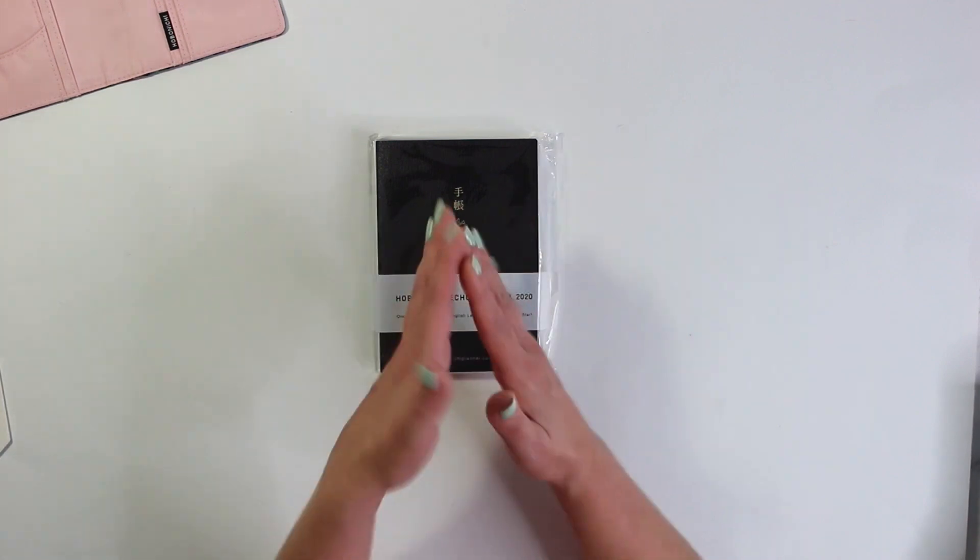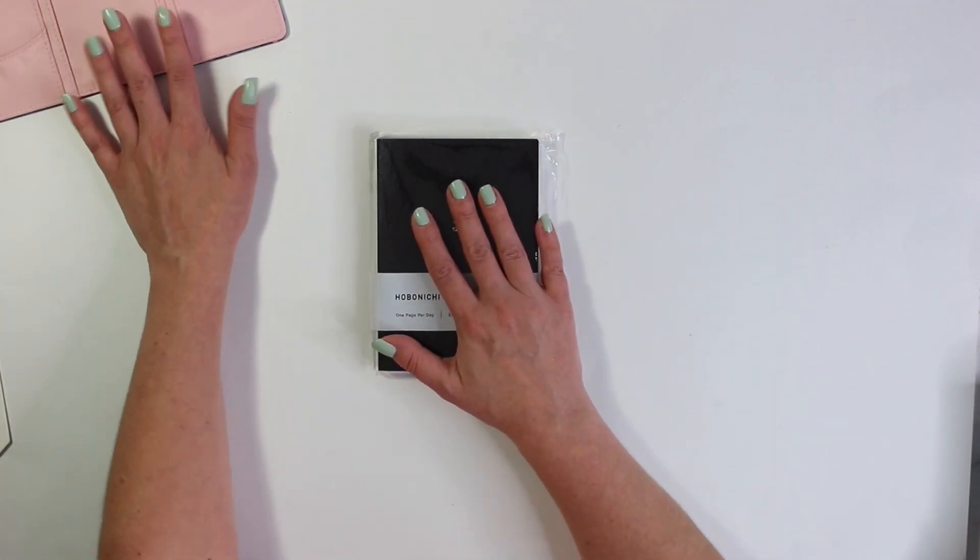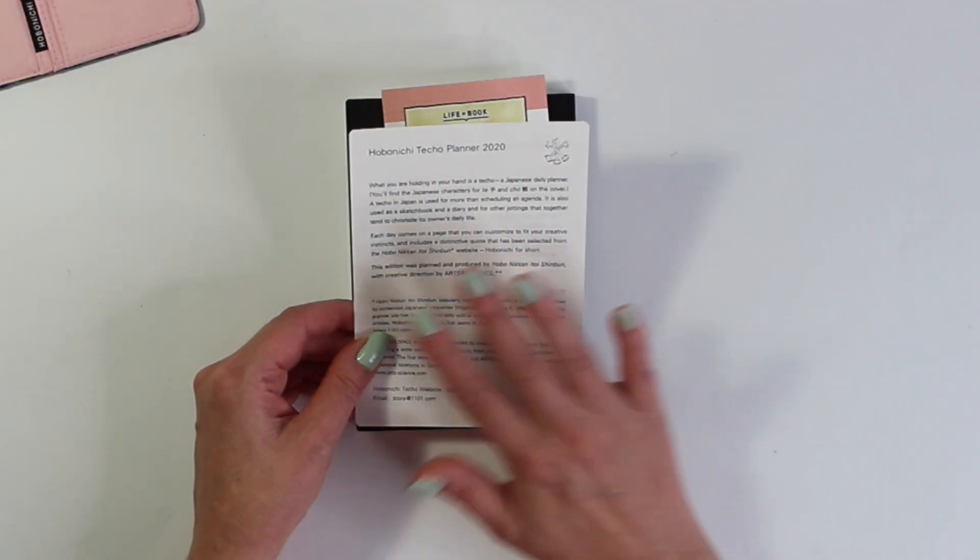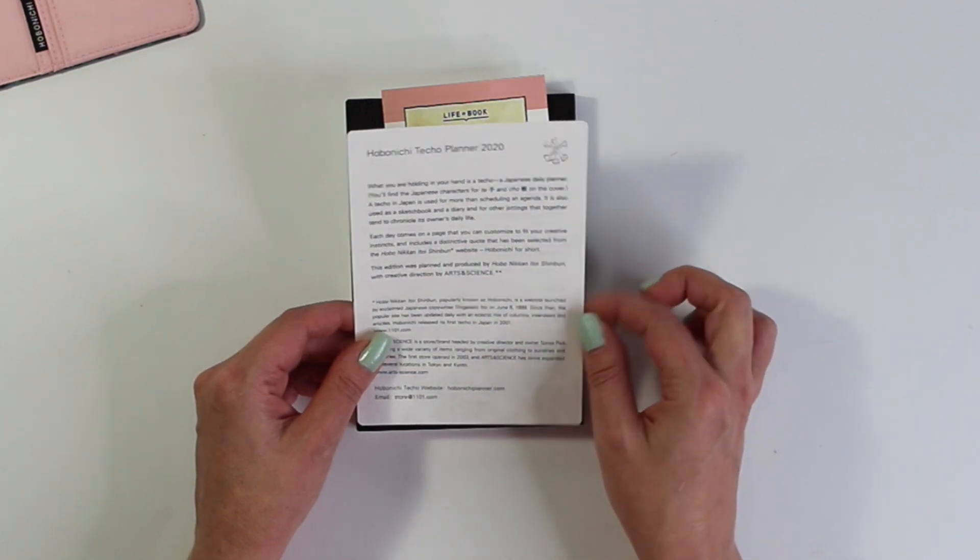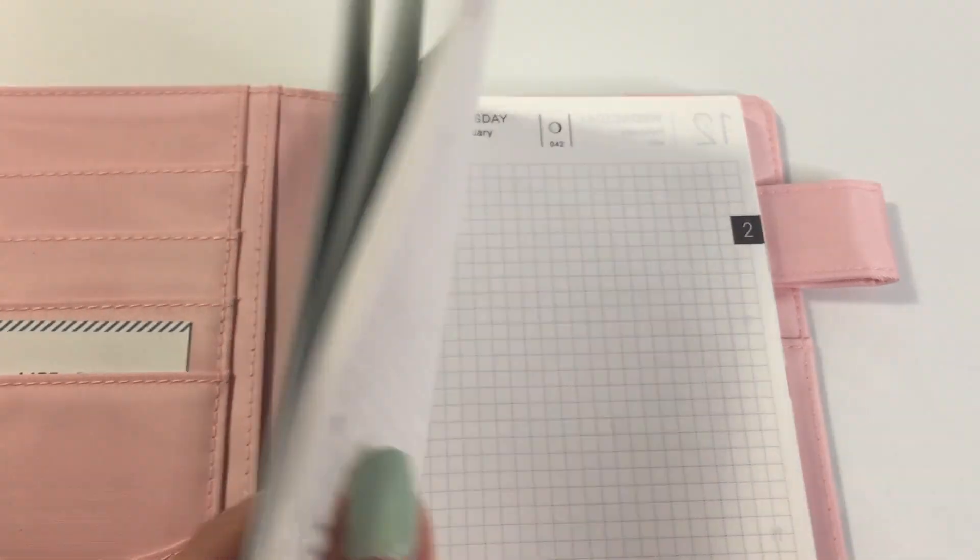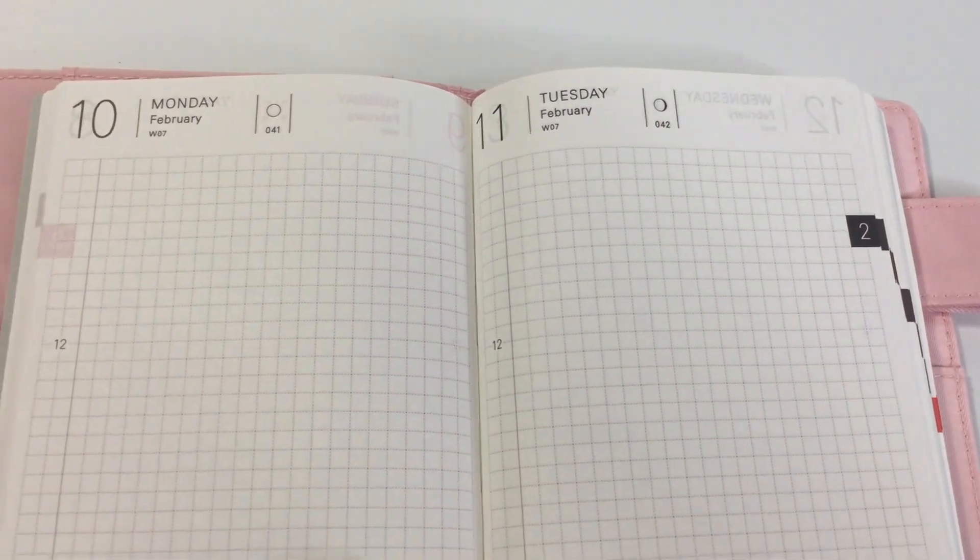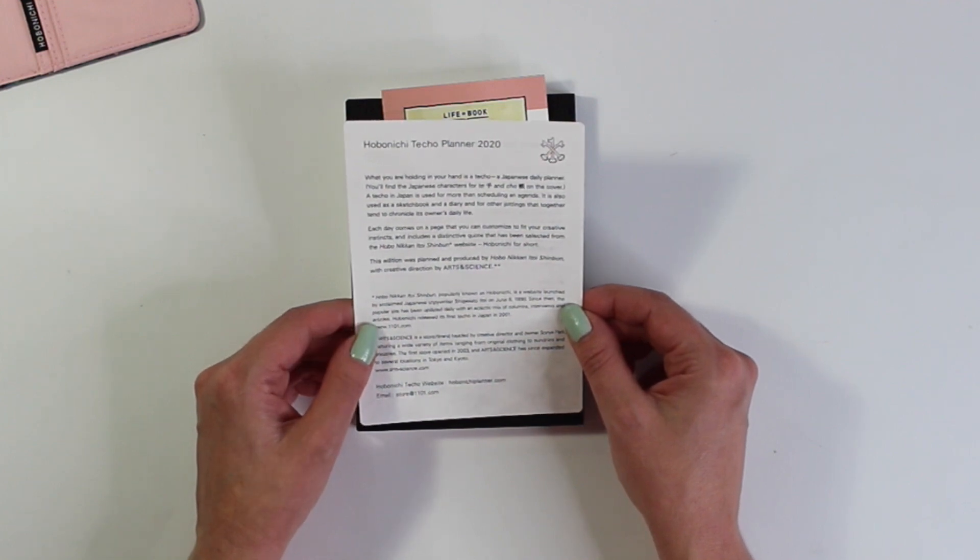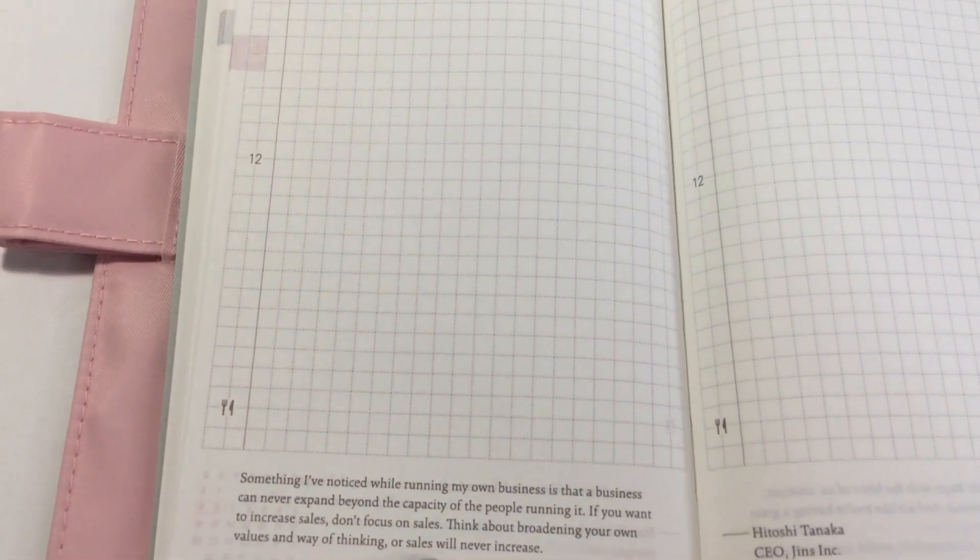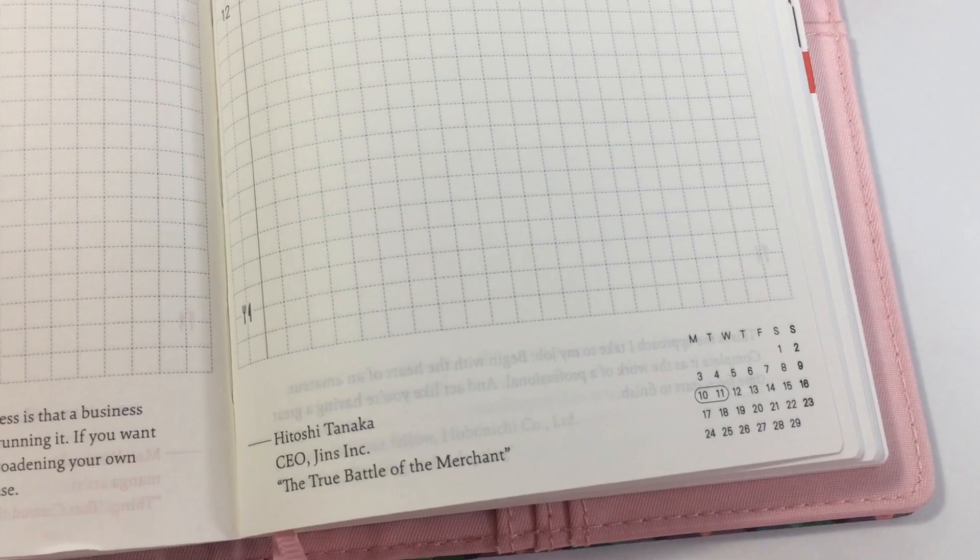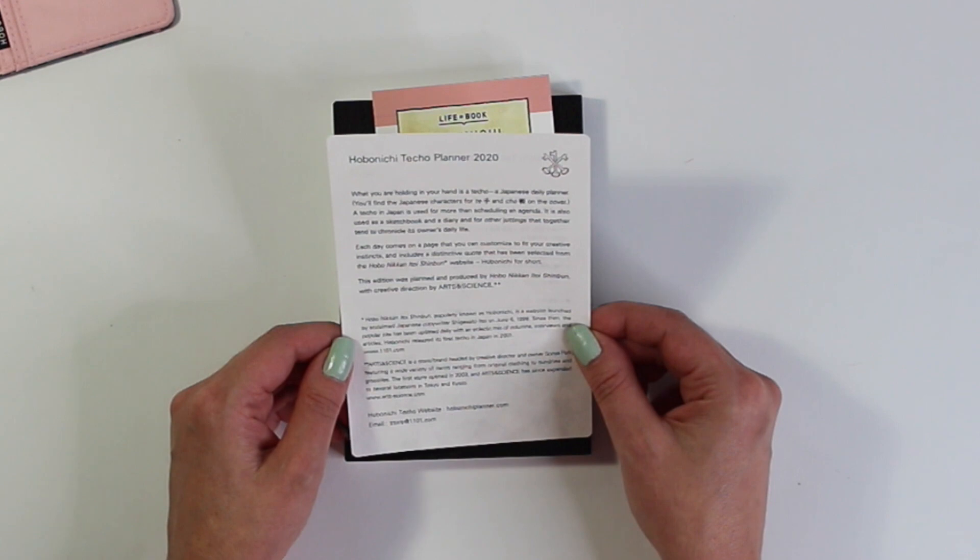I personally would have gone for the freebies but like I said these were not actually available on the Hobonichi website until late November and I personally want to play with my planner right now. All right so the first thing in here is this cute little card with this embossing in silver here. Very nice. It says the Hobonichi Techo Planner 2020. What you are holding in your hand is a techo, a Japanese daily planner. A techo in Japan is used for more than scheduling an agenda. It is also used as a sketchbook and a diary and for other jottings that together tend to chronicle its owner's daily life. This edition was planned and produced by Hobo Nikan Itoi Shinbun with creative direction by Arts and Science.